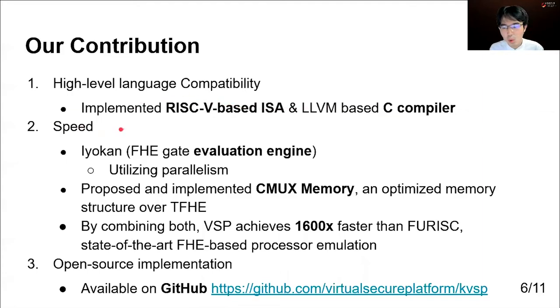For speeding up, we did two optimizations. One is the development of Iyokan, an FHE gate evaluation engine. This is needed to utilize parallelism. The other is CMUX memory. Because the memory circuit constructed by logic gates can be easily bigger than the processor circuit, a special cryptographical optimization for memories is effective. By combining both, we achieved 1,600 times faster implementation compared to the state of the art.